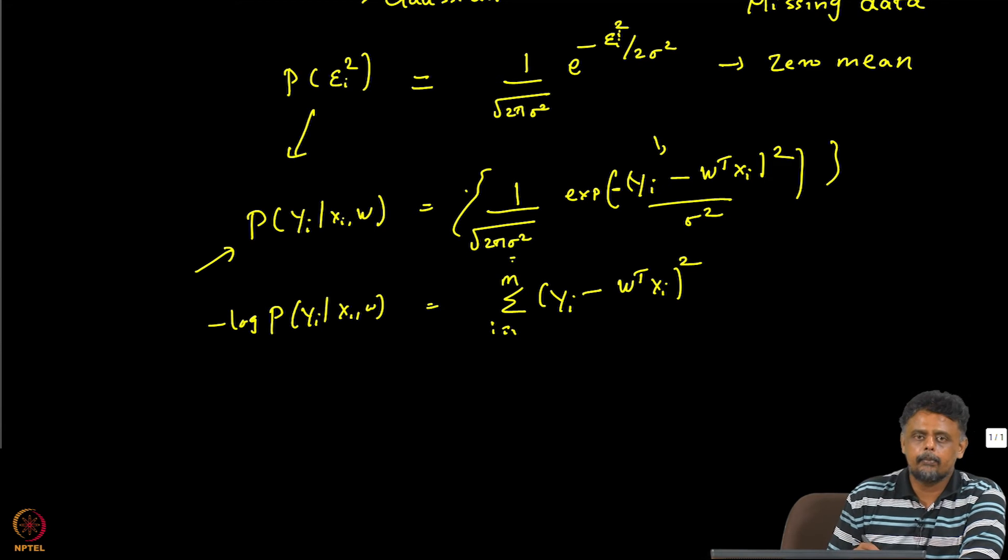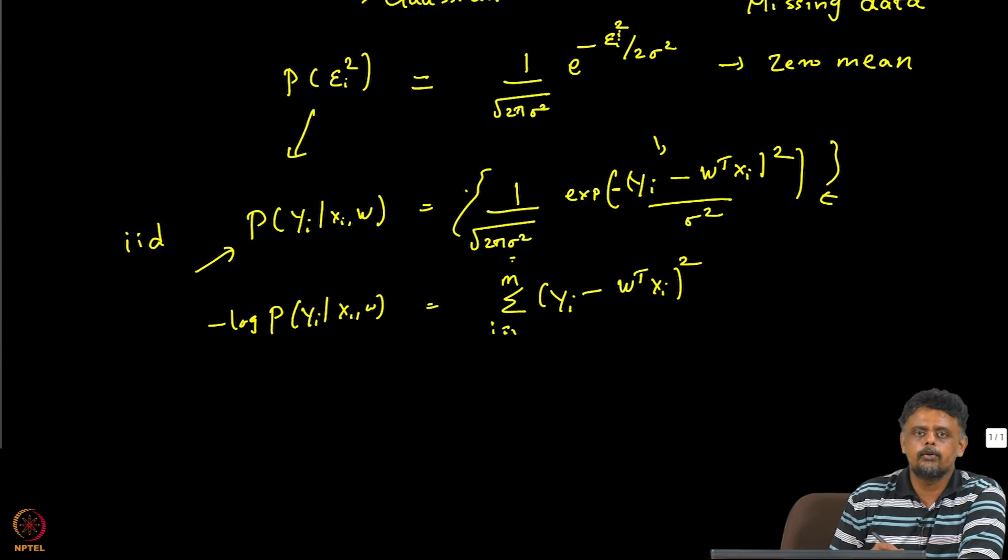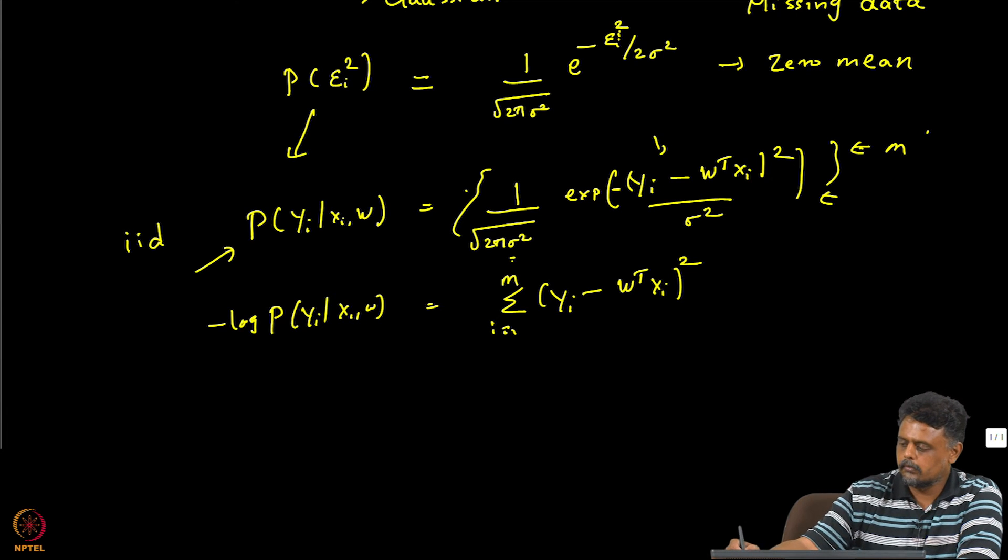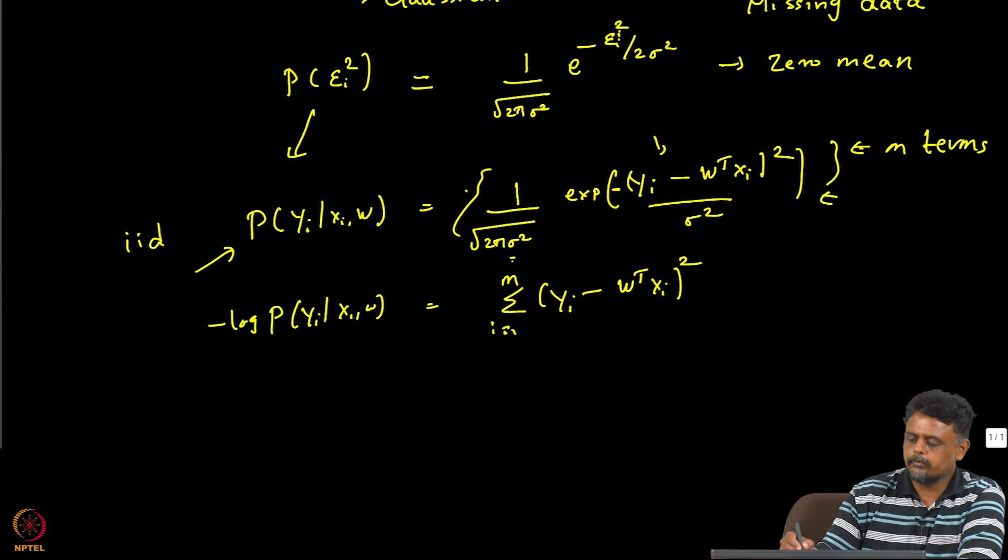So suppose your training data consists of m data points which we saw then it will be just a summation. You know why that happens is because if you want to maximize the probability of observing this data set assuming that they are IID, then what we get is the probability of the data set is the product of the probabilities of the individual data.